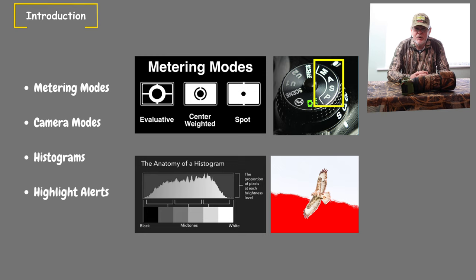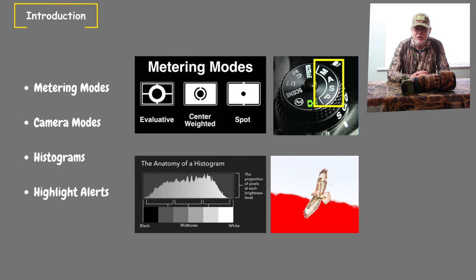In this video we'll look at metering modes and how the camera reads light. We'll look at the different camera modes and how they control different aspects of the exposure triangle. And we'll look at one or two things that allow us to read our exposure settings as we're actually photographing, namely the histogram and the highlight alerts. And it will all be in relation to wildlife photography.